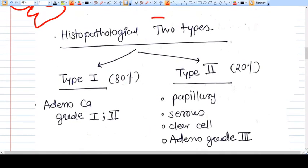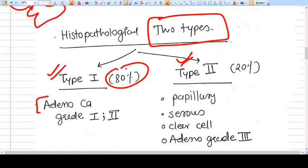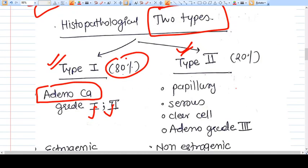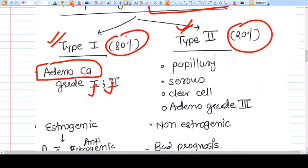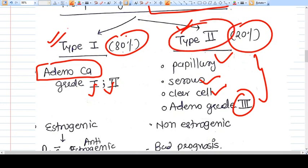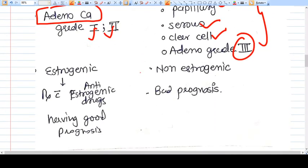Histologically there are basically two types: Type 1 and Type 2. Type 1 is 80 percent which includes adenocarcinoma grade 1 and 2. Type 2, which is 20 percent, includes papillary carcinoma, serous cell carcinoma, clear cell carcinoma, and adenocarcinoma grade 3. So this Type 2 is dangerous, Type 1 has good prognosis.